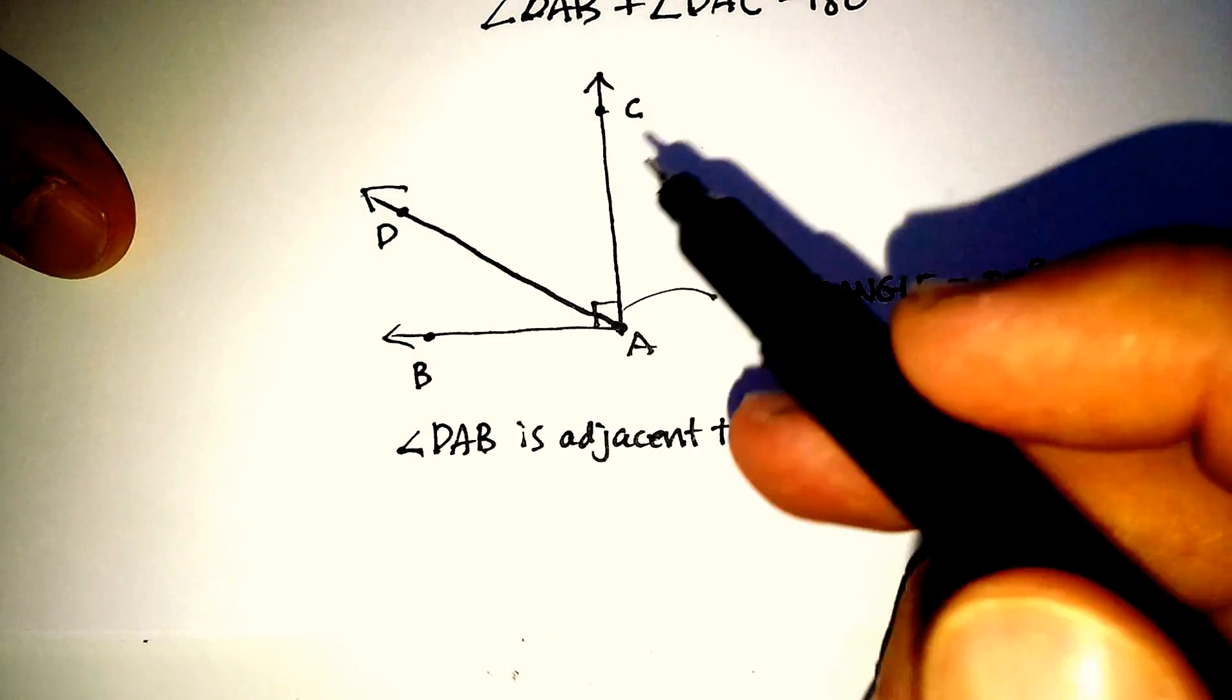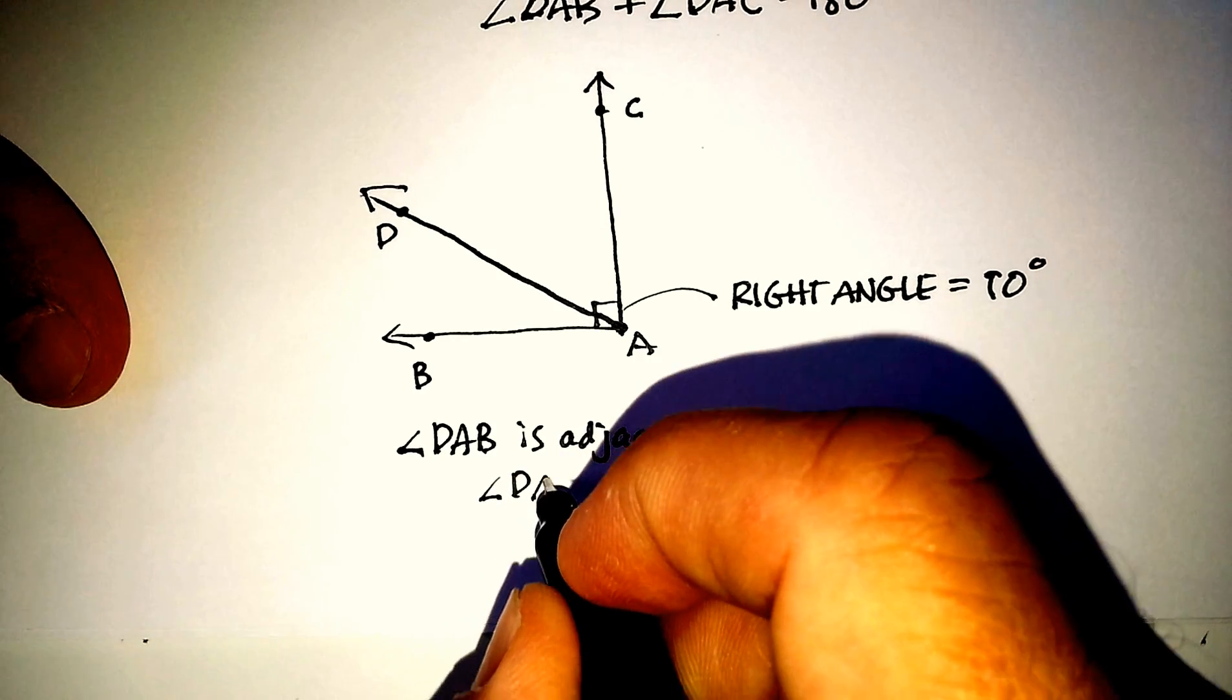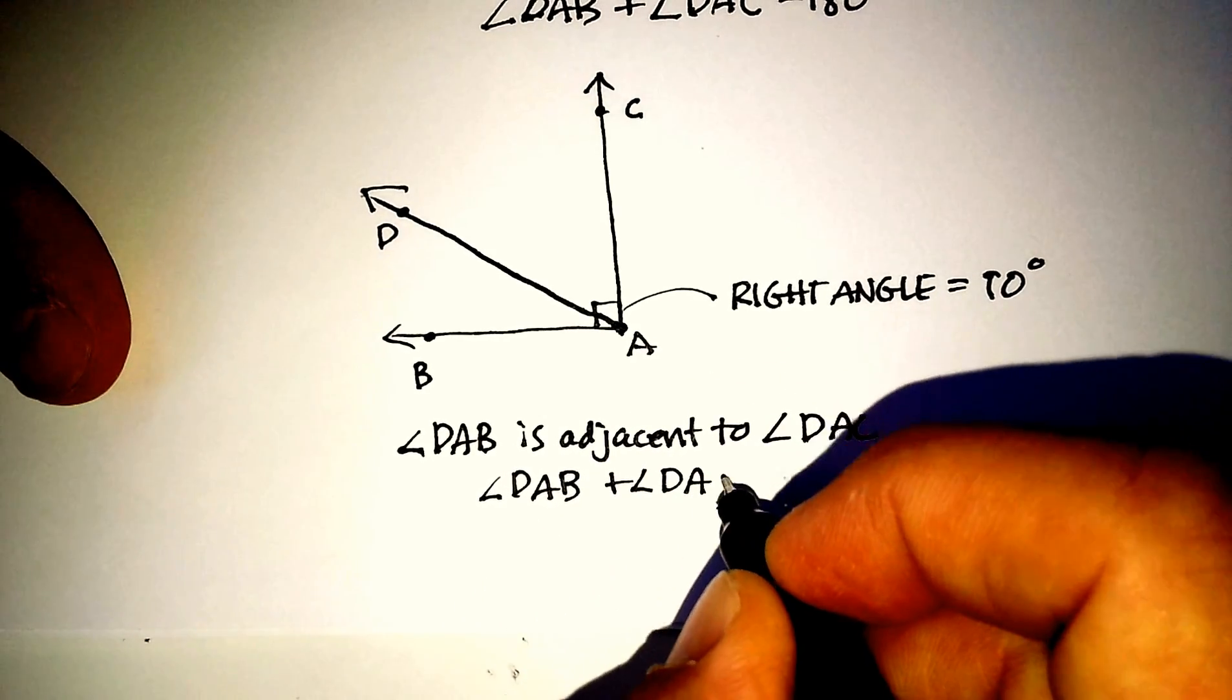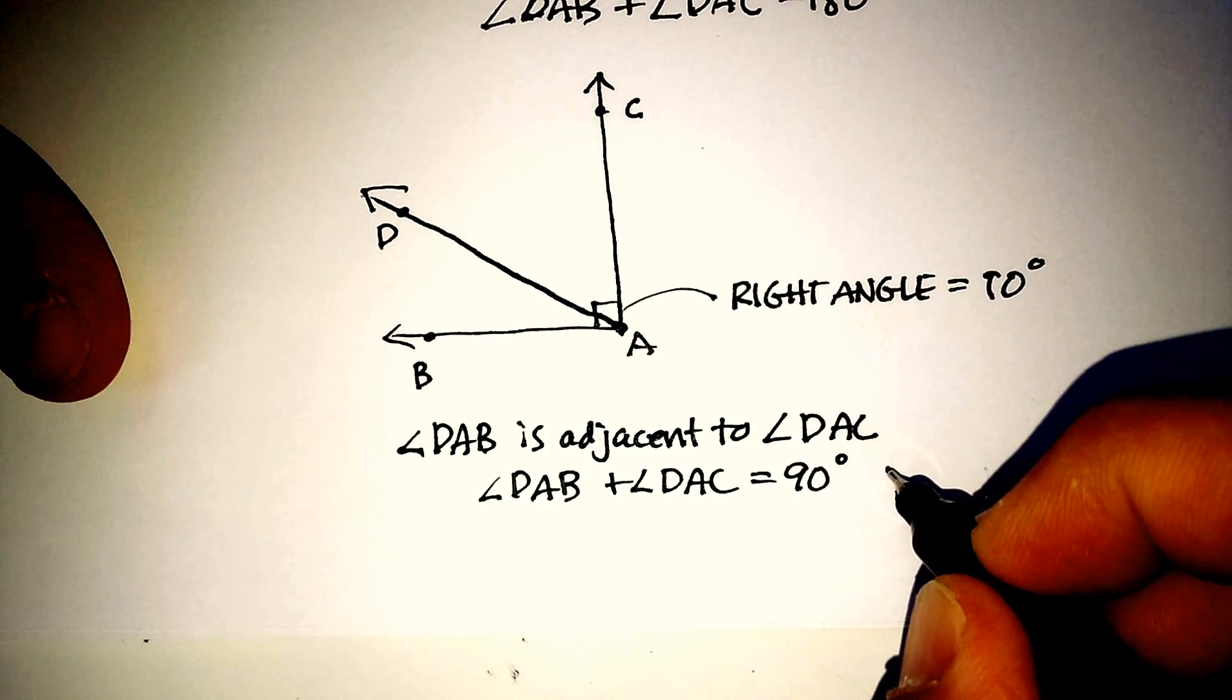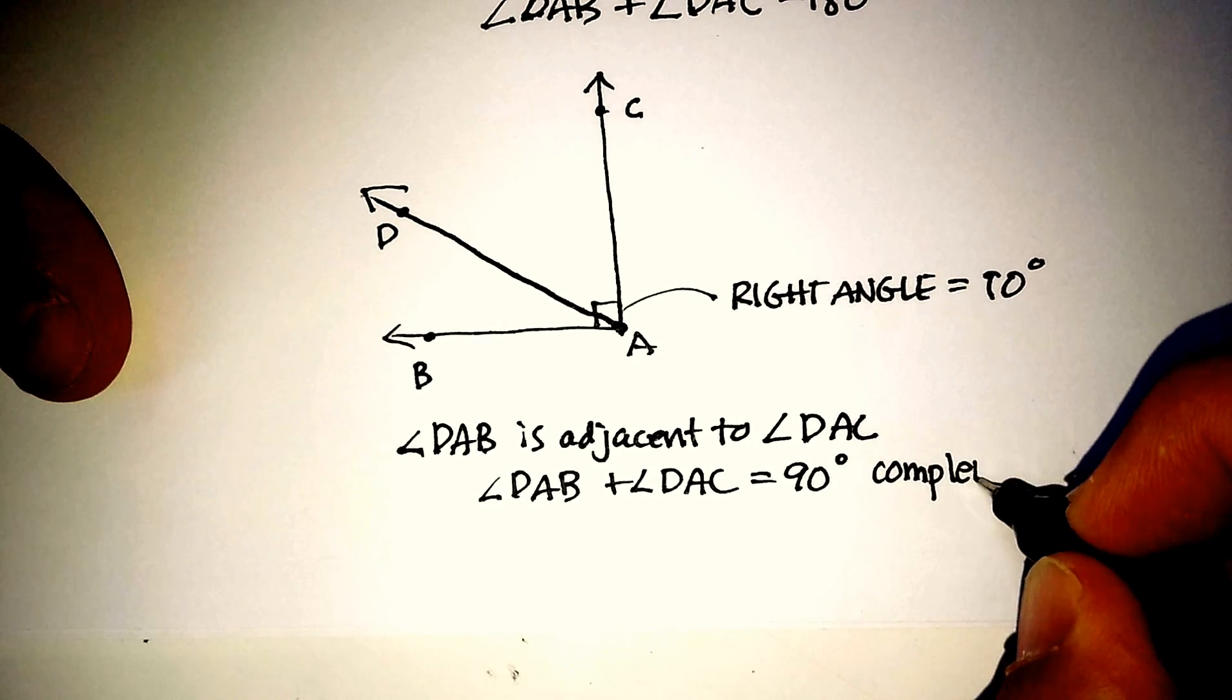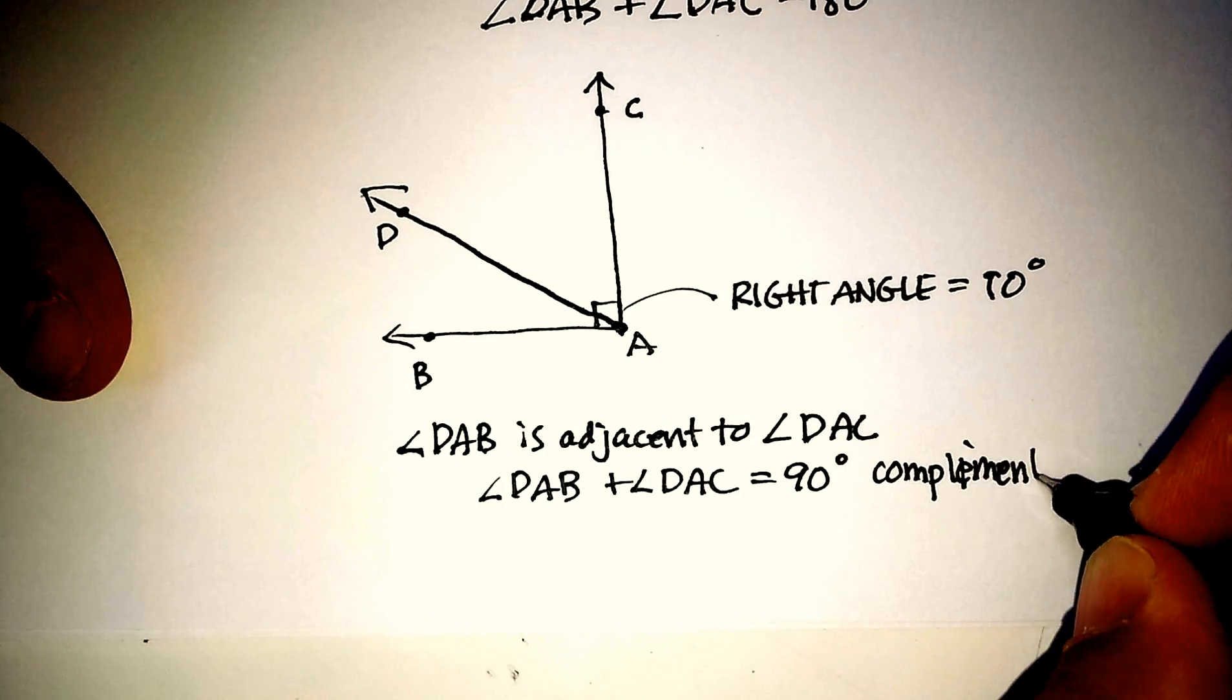And in this case, the sum of the two angles equals 90 degrees. Those are called complementary. Complementary angles.